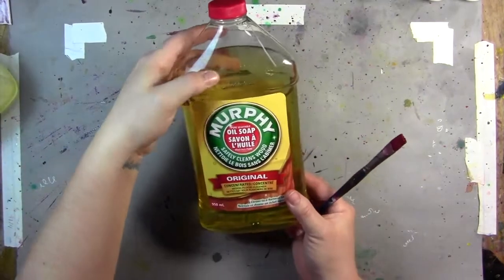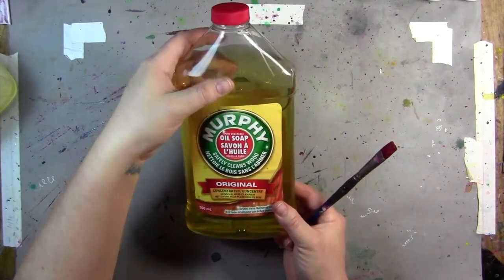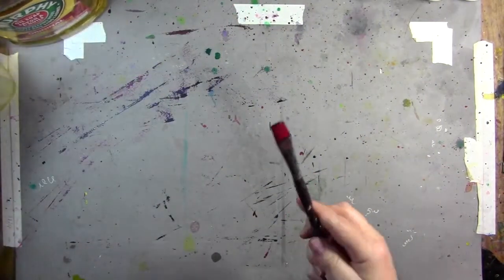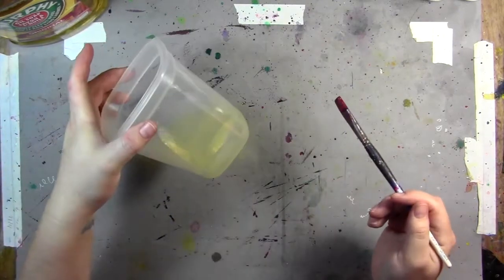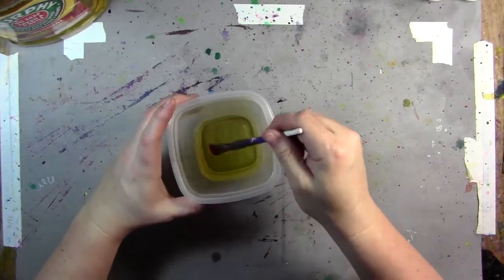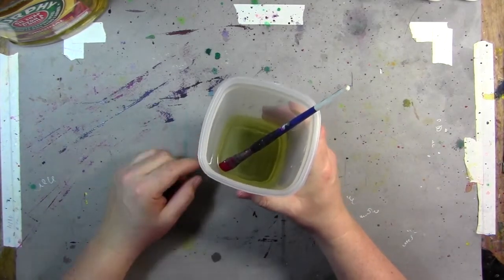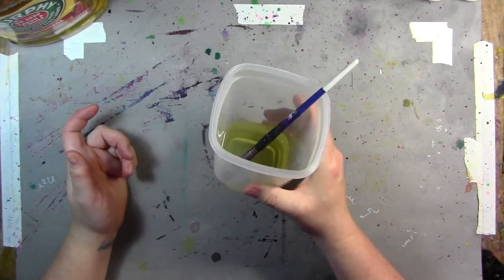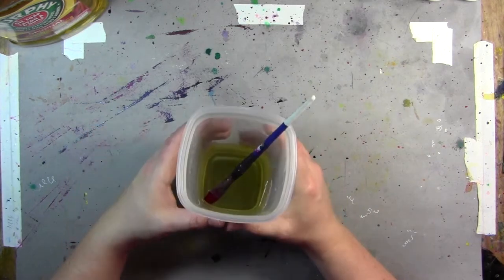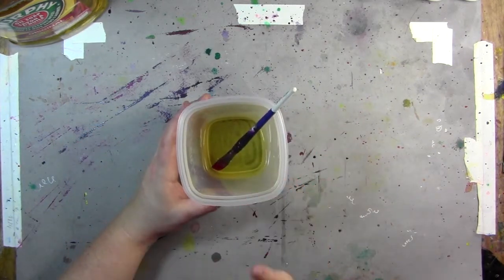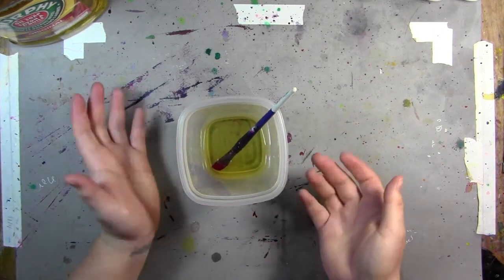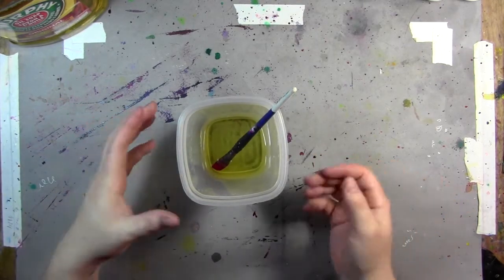What you use is Murphy's oil soap and it's super simple. I just put some into a container and have it fully cover the bristles, and now I'm gonna leave this for probably three or four days. I don't actually know how long you need to leave it. I left it for three or four days, so that's now my magic number.